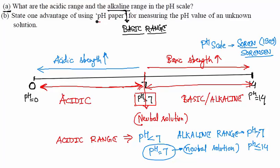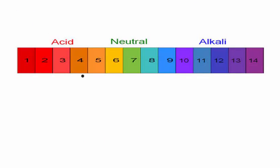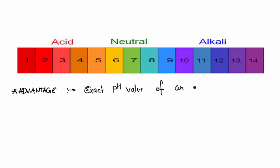Now the second question: state one advantage of using pH paper for measuring the pH value of an unknown solution. The advantage is that you can get the exact pH value of an unknown solution using pH paper.